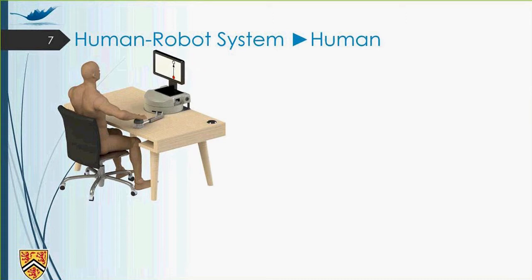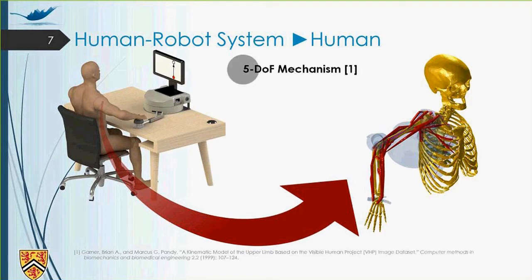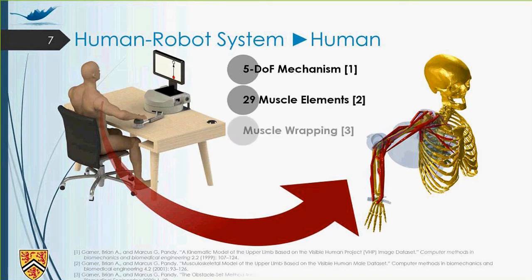On the other side of the human robot system, we have human. So for modeling human, we decided to use musculoskeletal model of the human. We used Garner and Pendy's model, which is a five degrees of freedom mechanism. And also, it has 29 muscle elements. And it has special kinds of muscle wrapping, but I will talk about it later. This model has some problems that we modified it inside the MapleSim software, and I will talk about it in the next slide.